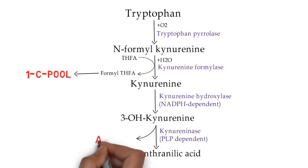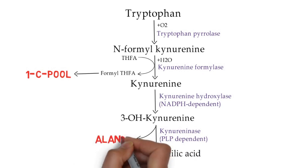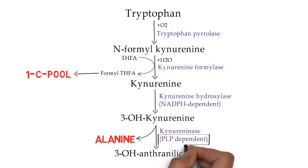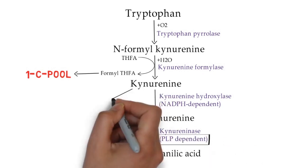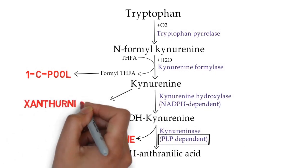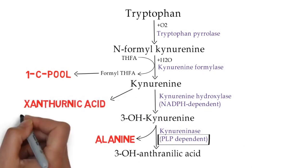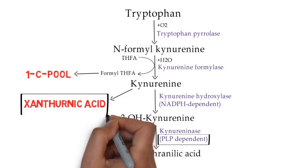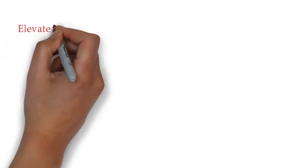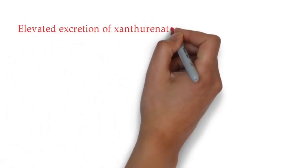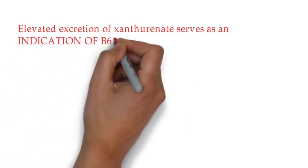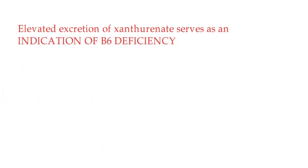3-hydroxy kynurenine is converted into 3-hydroxy anthranilic acid by a pyridoxal phosphate-dependent enzyme, kynureninase, which splits off one molecule of alanine. Due to lack of pyridoxal phosphate, the kynureninase reaction is blocked and kynurenine is diverted to form xanthurenic acid.